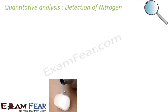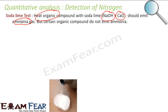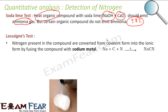Now, what if you want to find nitrogen? We have one test called the soda lime test. We heat the organic compound with soda lime, and if it gives ammonia gas, it means it has nitrogen. But this is not 100% — about 98% of the time, any organic compound with nitrogen will give ammonia when heated with soda lime. However, there are some cases where it may not give ammonia but still has nitrogen. So we use Lassaigne's test. The first step is to convert the covalent nitrogen to ionic nitrogen.